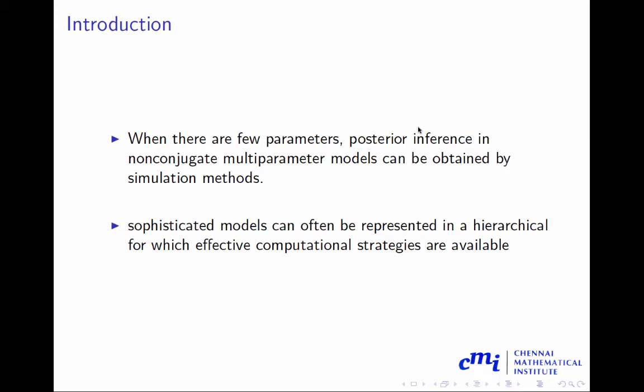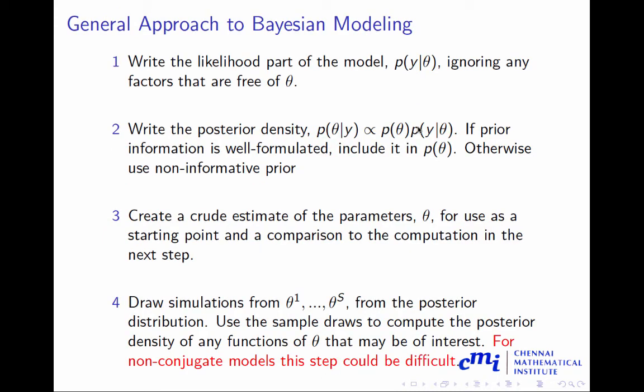We have discussed some basic methods like acceptance-rejection or importance sampling, and also some advanced methods like Markov chain Monte Carlo in quite a bit of detail. The general approach to Bayesian modeling: first, you write down the likelihood part of the model, or sometimes it's called the data model.